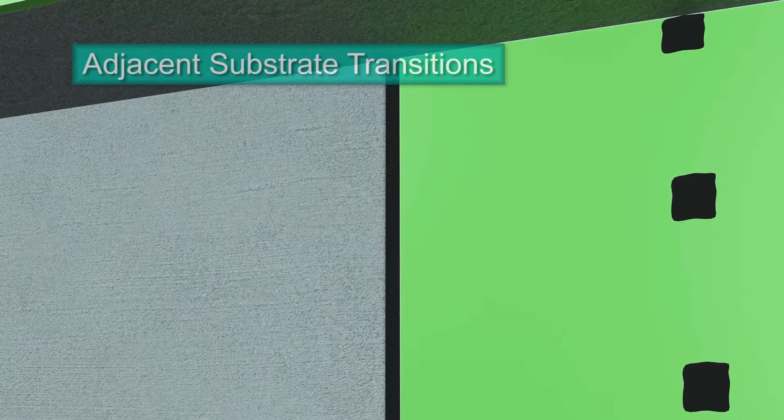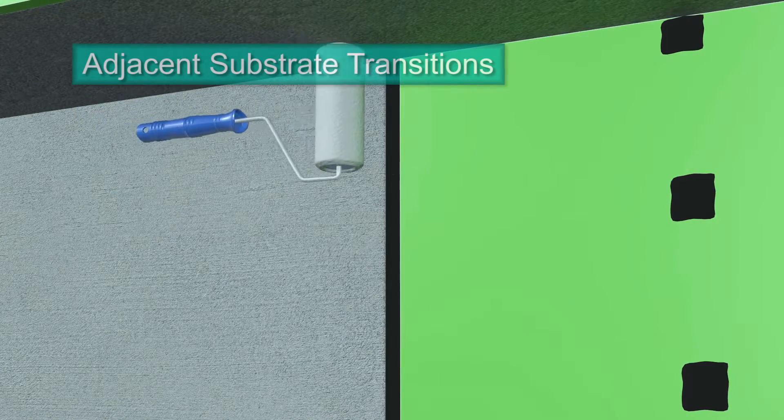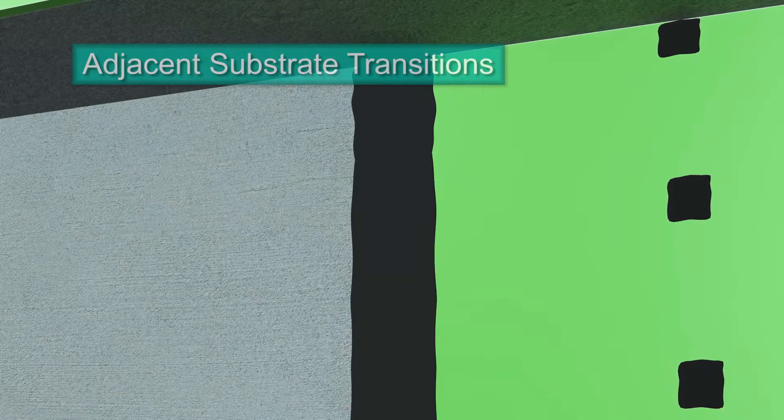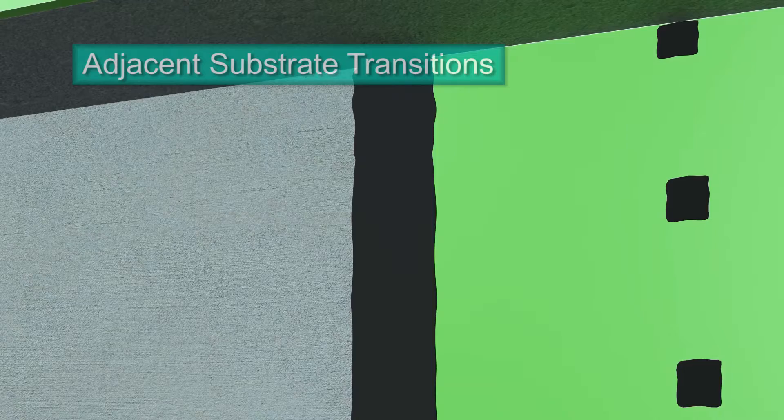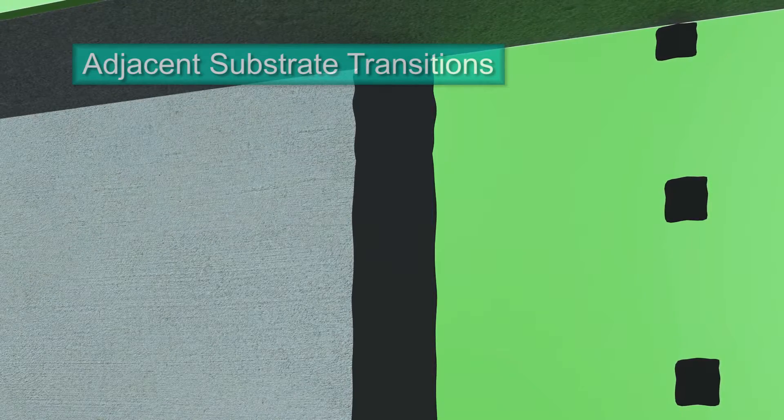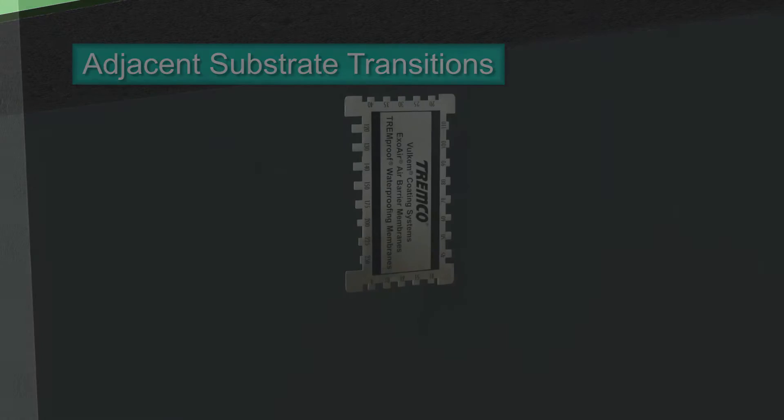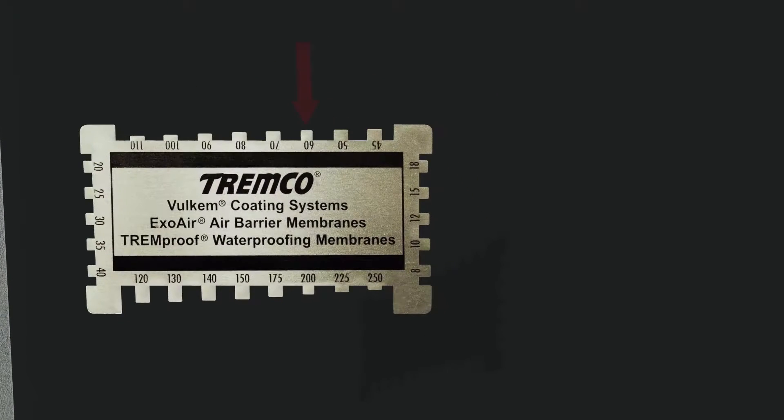Using a roller or sprayer, apply the ExoAir 220 fluid membrane to the adjacent substrate, over the sealant and onto the face of the panel. Finish applying the ExoAir 220 fluid membrane to the remaining adjacent substrate. ExoAir 220 is applied at 60 wet mills to achieve 40 dry mills on exterior sheathing, and concrete substrates require 70 wet mills to achieve 35 dry.